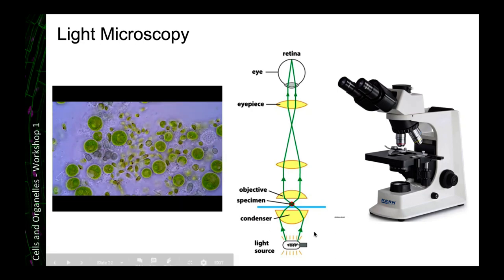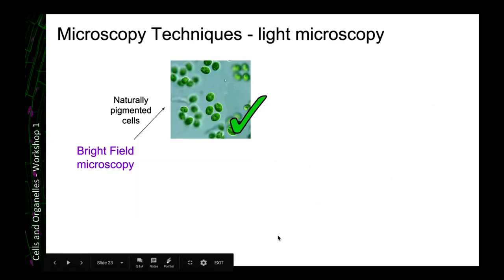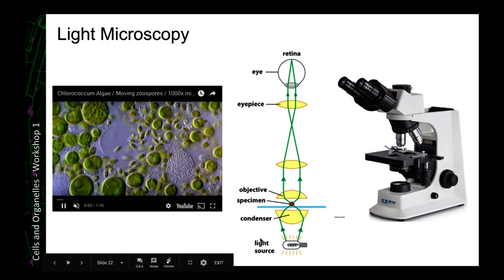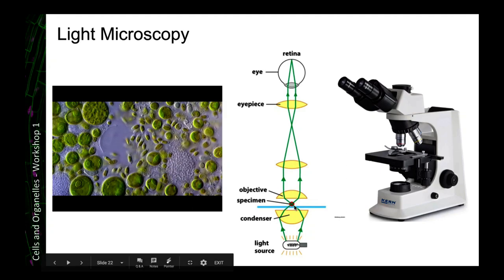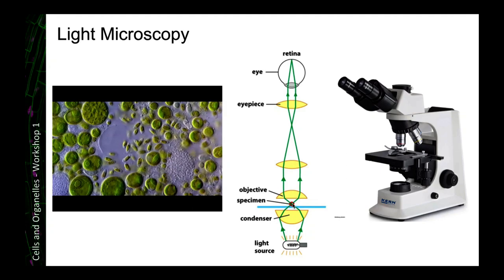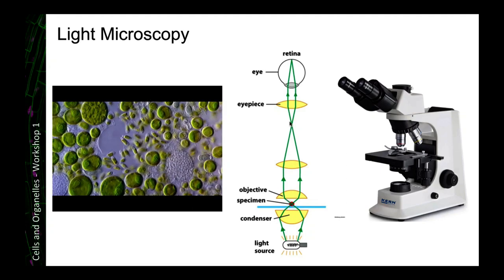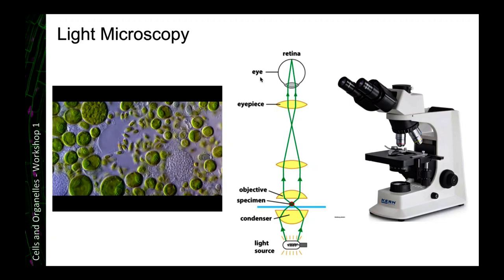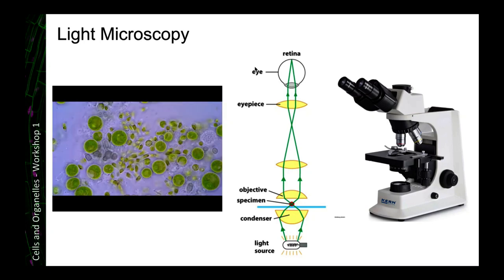And the way that the light microscope works is we have a light source, which then goes through a condenser. So it focuses the light on our specimen. After that, the light goes through a series of lenses to get to the eyepiece. And then if we focus it correctly, then we form an image. So you'll probably have used these sorts of microscopes before, and you can get really nice pictures from them.